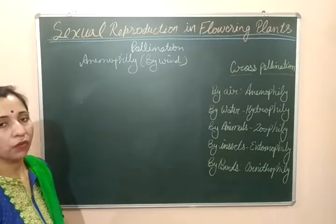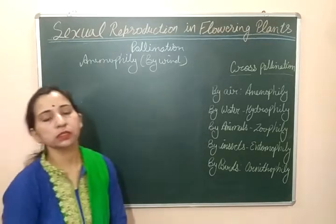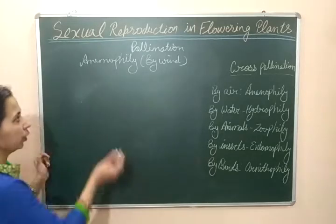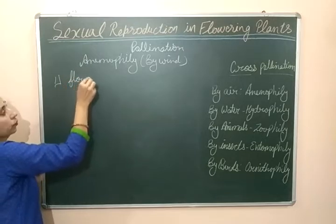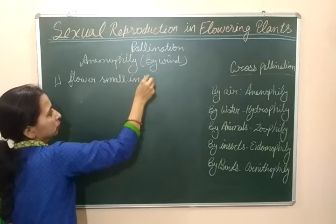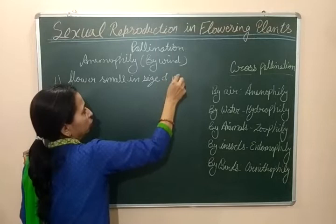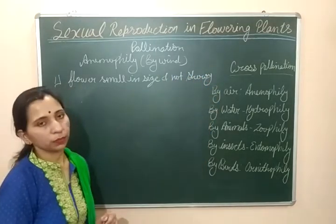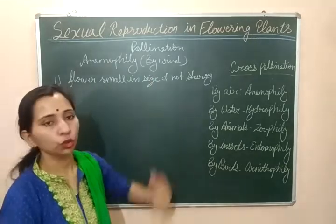For doing pollination by wind, the flowers have some characteristic features. The first characteristic feature is that the flowers are small in size and they are not showy. This is the characteristic by which flowers support anemophily — they are small in size and they are not showy.